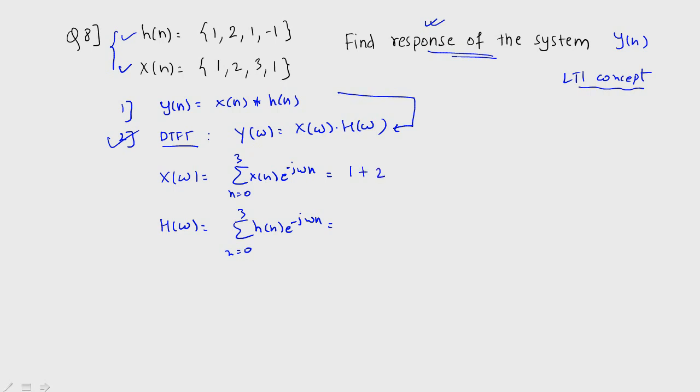1 plus 2 times you have E raised to minus J omega, then you have plus 1 times E raised to minus 2 J omega. And you have 3 times when I talk about this term, you have 3 times 2 J omega plus you have E raised to minus 3 J omega. So this is the term you will get from X of omega.